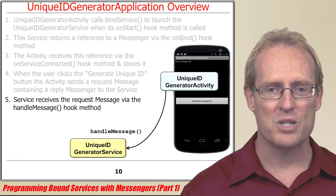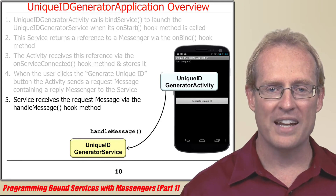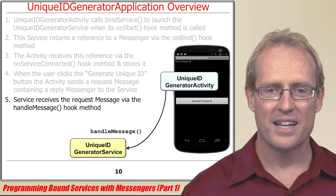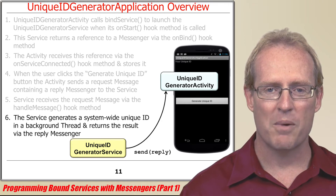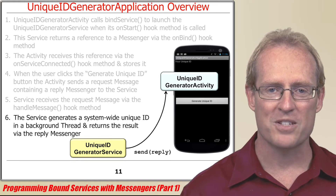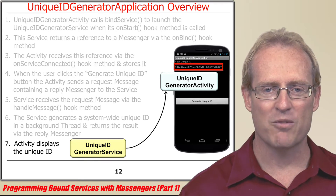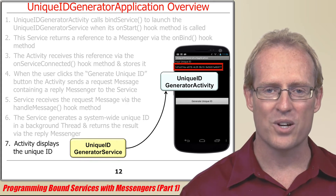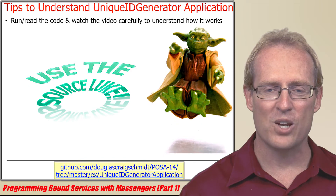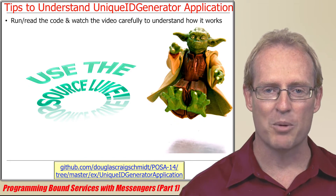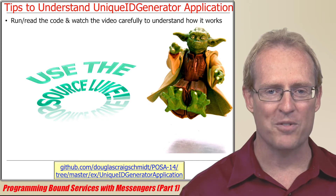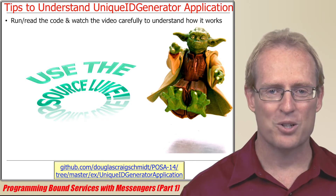The service receives this message via a handleMessage hook method and enqueues the message in a background thread for subsequent processing. This background thread generates the unique ID and returns the result by calling send on the reply messenger reference. The activity then receives this reply message via a handleMessage hook method and displays the unique ID to the user. The source code for the unique ID generator application is available at a provided link, so download it and watch this video and the next one carefully, perhaps multiple times, to learn how it works.